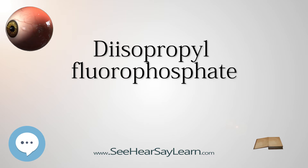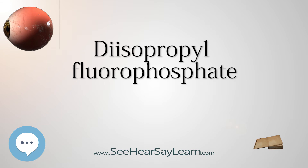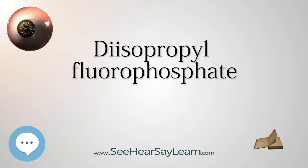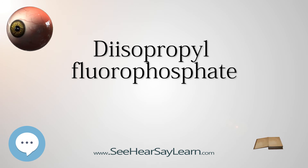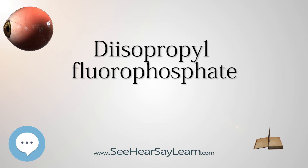Chemistry: Isofluorophate, the diisopropyl ester of fluorophosphoric acid, is made by reacting isopropyl alcohol with phosphorous trichloride, forming diisopropyl phosphite, which is chlorinated and further reacted with sodium fluoride to replace the chlorine atom with fluorine, thus giving isofluorophate.